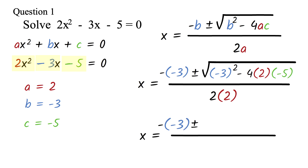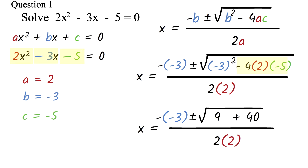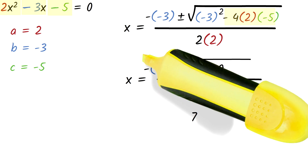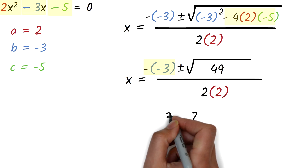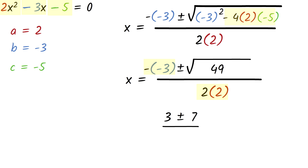We work out what is under the root sign first. Negative 3 squared is negative 3 times negative 3, which is 9. Minus 4 times 2 times negative 5 will be positive 40. So we add 9 plus 40 to get 49. We can then find the square root of 49, which gives us 7. We know that minus negative gives positive, so minus negative 3 is simply positive 3. Also, the 2 times 2 in the denominator will be 4.